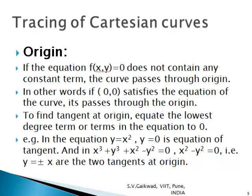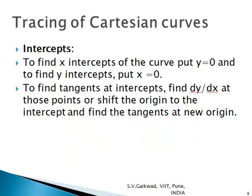After studying the origin, find any intercepts with the two axes. To find the x-intercept, put y = 0; to find the y-intercept, put x = 0. To find the tangent at these intercepts, find dy/dx at those points, or shift the origin to the intercept — that intercept becomes the new origin — and find the tangent at the new origin by equating the lowest degree term to zero.